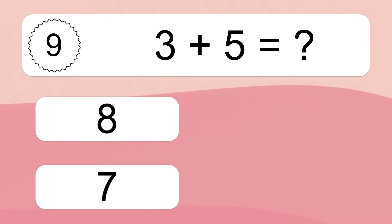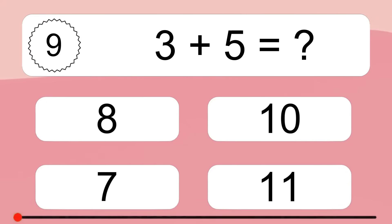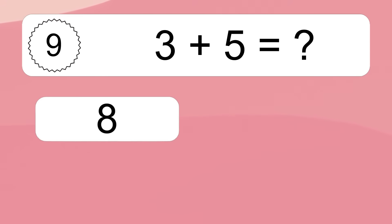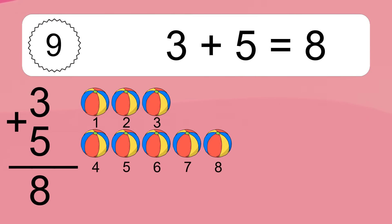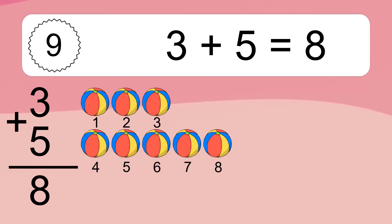3 plus 5 equals what? 1, 2, 3, 4, 5, 6, 7, 8. 3 plus 5 equals 8. Let's count it: 1, 2, 3, 4, 5, 6, 7, 8.